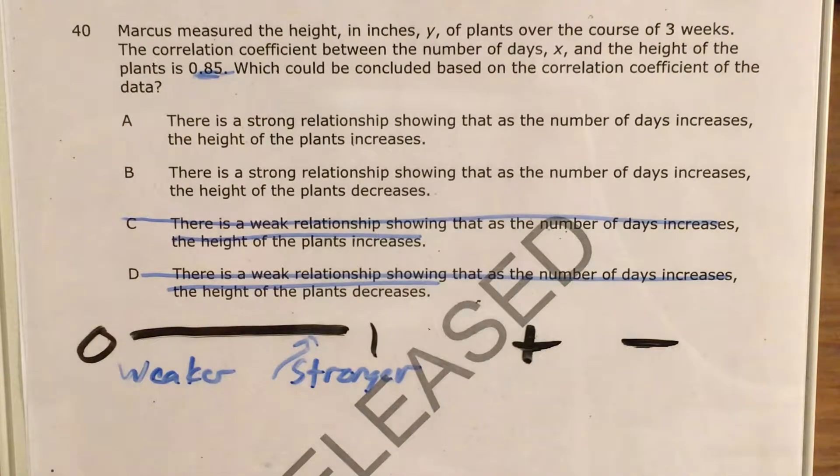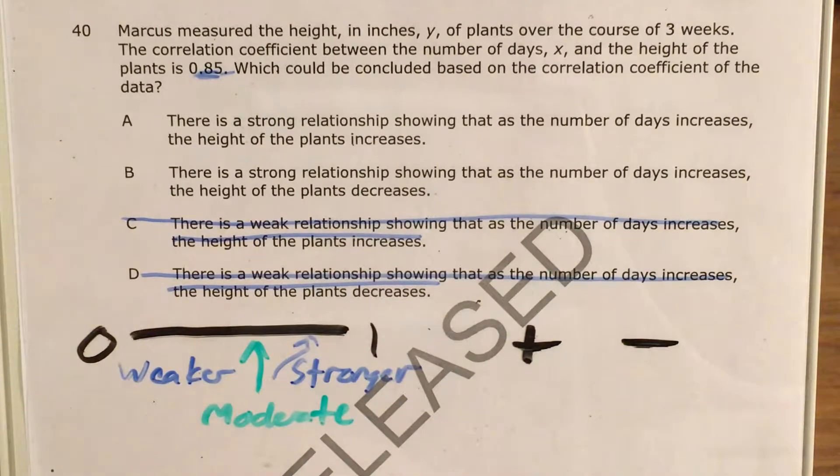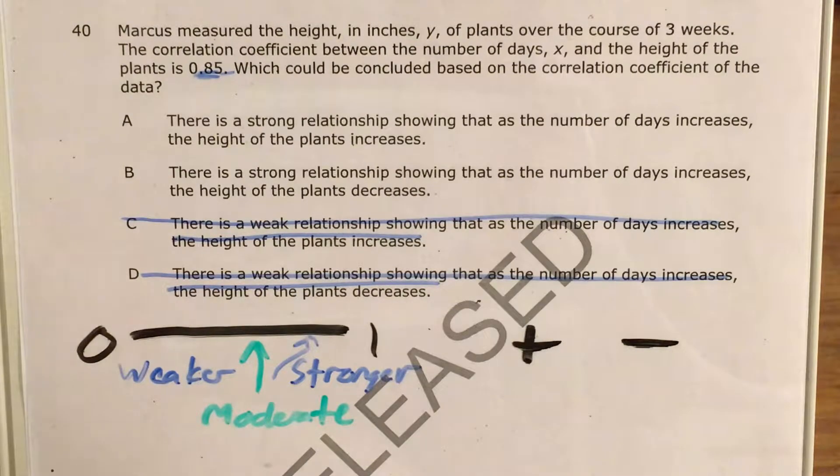Now it's possible that you could see the word moderate or slightly strong or something like that for a value in the middle. Thankfully, they didn't do that. They just went ahead and put the number right here on the unambiguously strong side.